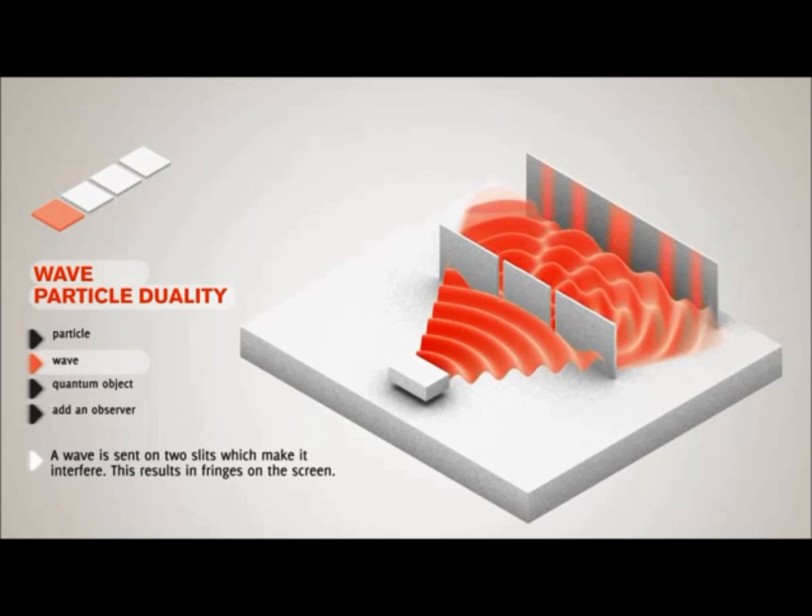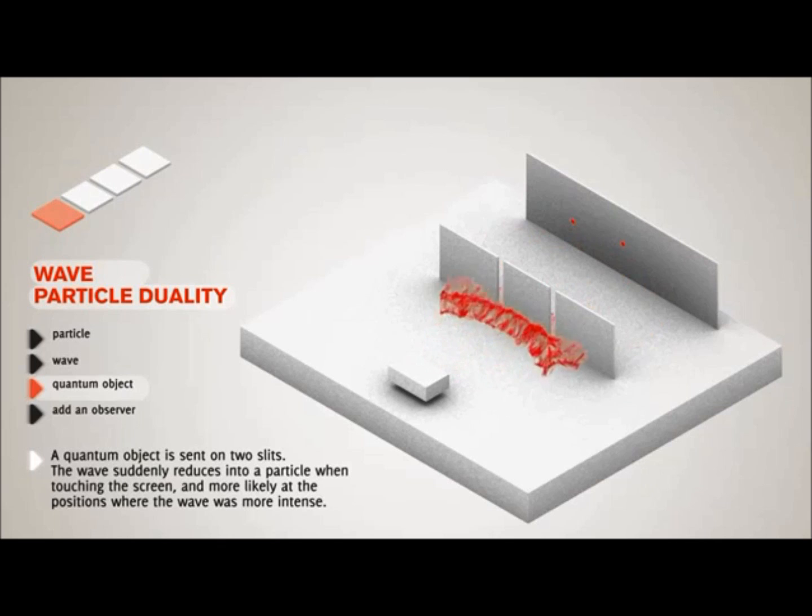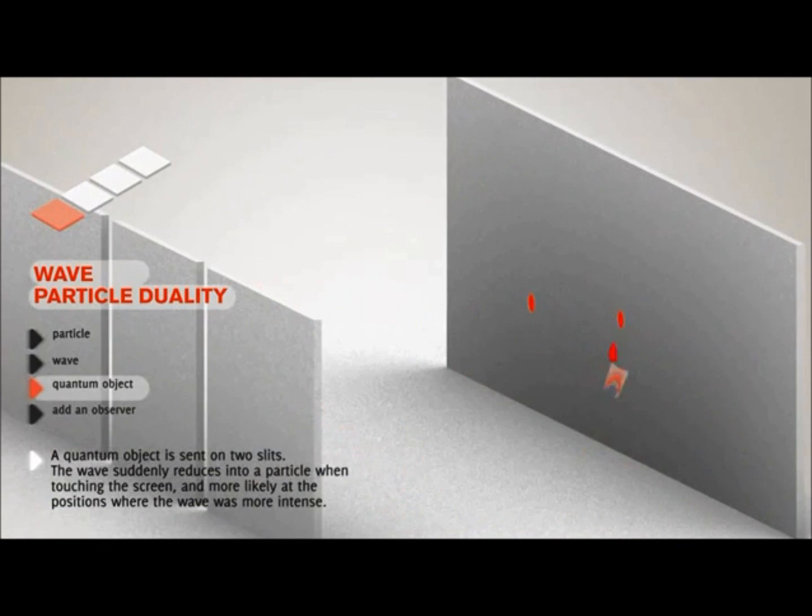An object with wave-particle duality shot through the same two-slit experiment behaves like both of these objects. The object moves forward like a wave, creating zones of interference after the slits where it cannot be. However, when it hits the detector, it becomes a single particle, creating one measurement point where the wave is strongest. If this is done repeatedly, the particles are randomized, but only in vertical bands, and not in the region where interference canceled the waves.